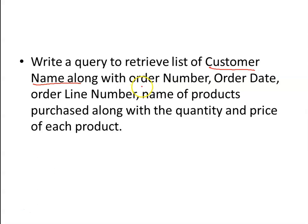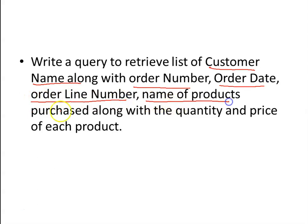You are required to find out the order number, the order date, the order line number, the name of the products purchased, along with the quantity of each product and the price of each item.